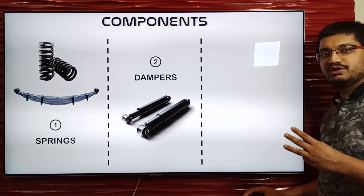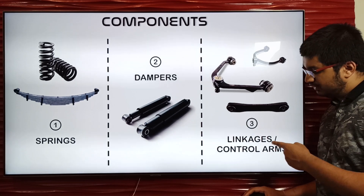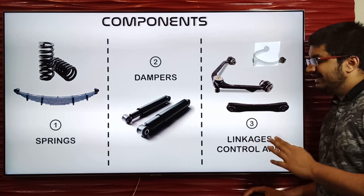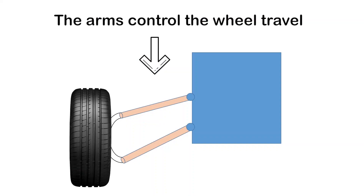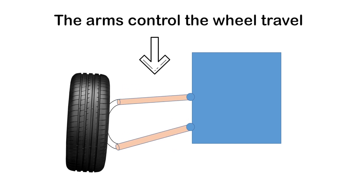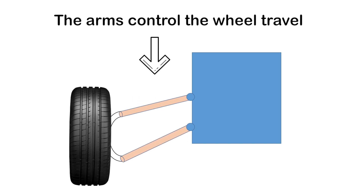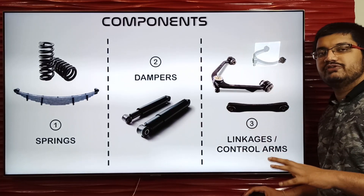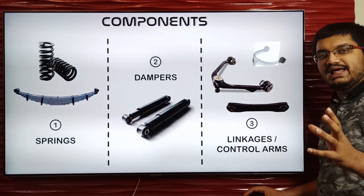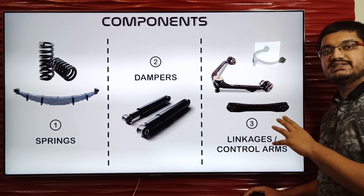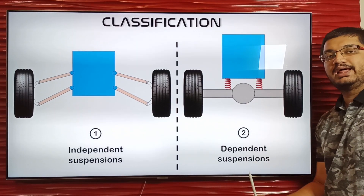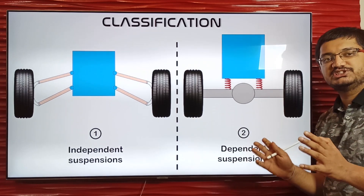The third important component of the suspension system is the linkages or control arms. These connect the wheel of the vehicle to the frame and permit relative motion between them. The geometry and sizing of these linkages, along with the spring and damper, completely control the up-and-down motion of the wheel and hence affect the vehicle dynamics. There are many parameters that linkages can set to control vehicle dynamics, making their geometry very crucial for overall vehicle performance.